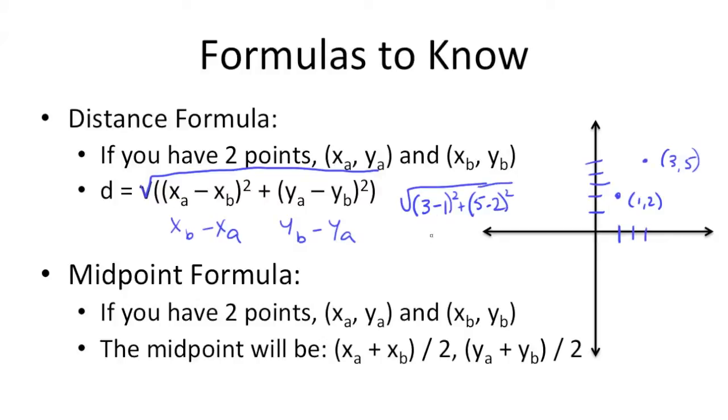the distance between these two points is the square root of (3 minus 1) squared plus (5 minus 2) squared, which gets us 2 squared, which is 4. Here we get 3 squared, which is 9. We get 4 plus 9 is 13, square root of that. So the distance between these two points is the square root of 13.